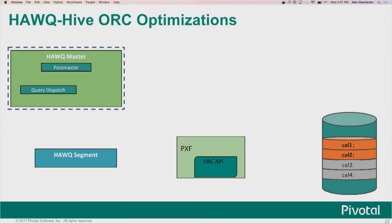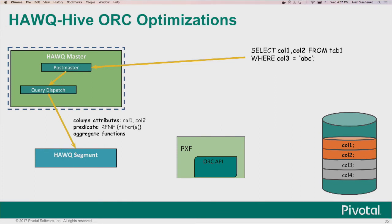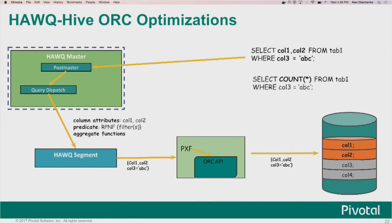Before Hive RC, we were doing a select star on each segment per partition, which wasn't great. With RC, we had to modify Hawk and PXF to send additional query attributes such as projected columns. We encoded predicates using reverse Polish notation and sent aggregate functions as well when present. Once the segment gets that additional information, it talks to PXF, which passes those attributes as parameters to the RC API — so instead of reading the whole RC file, we only read a small portion. RC files also have statistics, so we could answer basic aggregate functions like count star directly from those statistics.